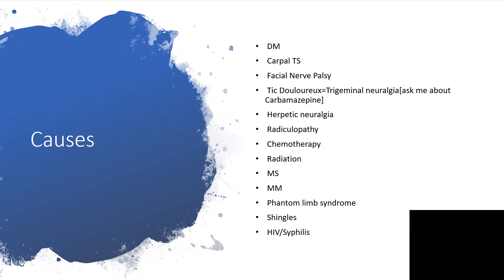What are the possible causes of neuropathic pain? If you go through many literature, they might put diabetes mellitus further down, but I'm going to talk about it first. Also on the list is carpal tunnel syndrome and trigeminal neuralgia — also called tic douloureux. Carbamazepine was originally manufactured to treat tic douloureux, that is trigeminal neuralgia, fifth cranial nerve neuralgia.